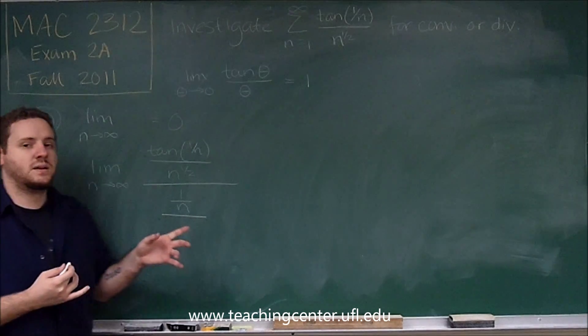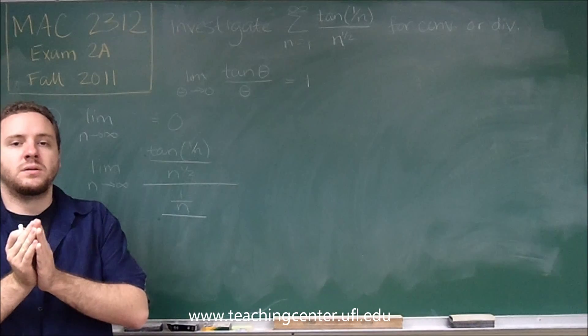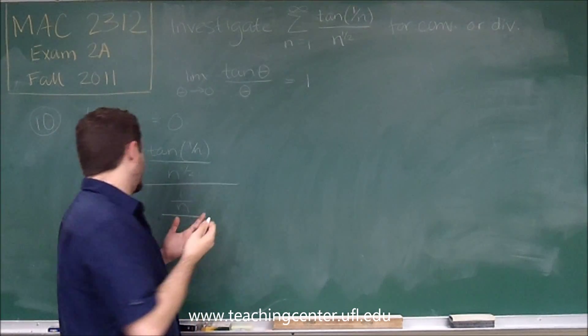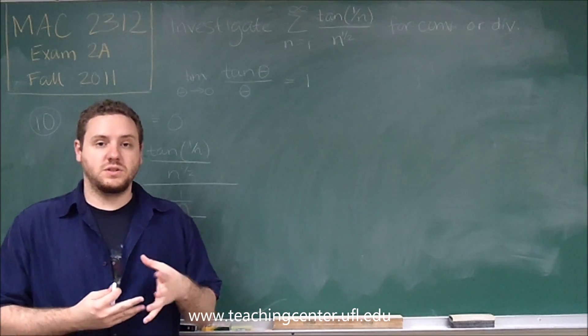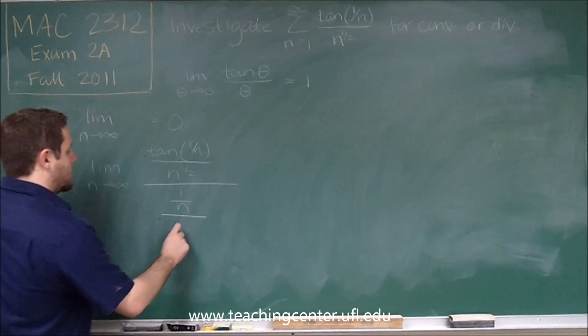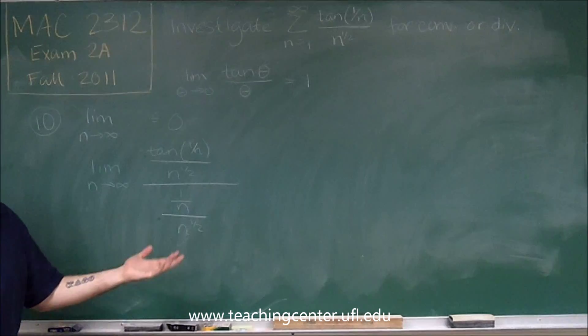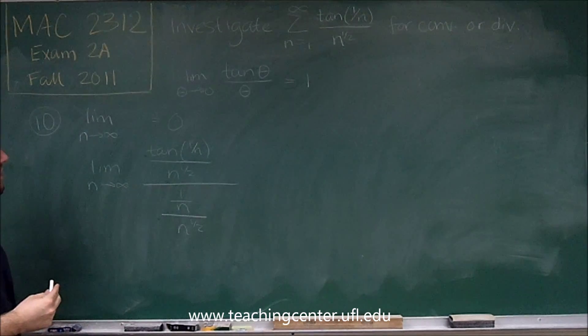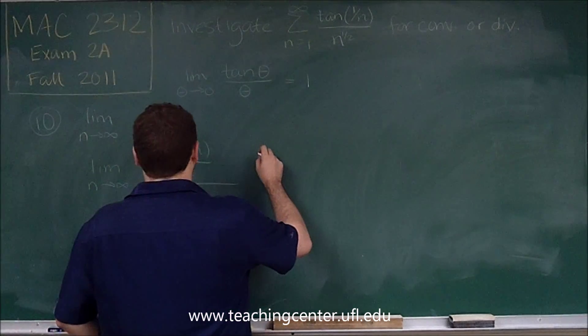And then we can divide that even further. Because remember that with the limit comparison test, all we need is that we need to have a positive finite number. And then we know that these two functions have the same convergence or divergence. We want to divide that by n to the 1 half also, so therefore the n to the 1 halfs cancel out.